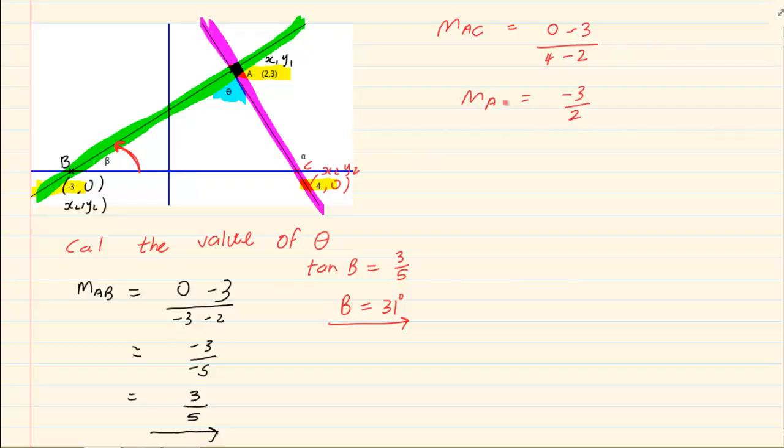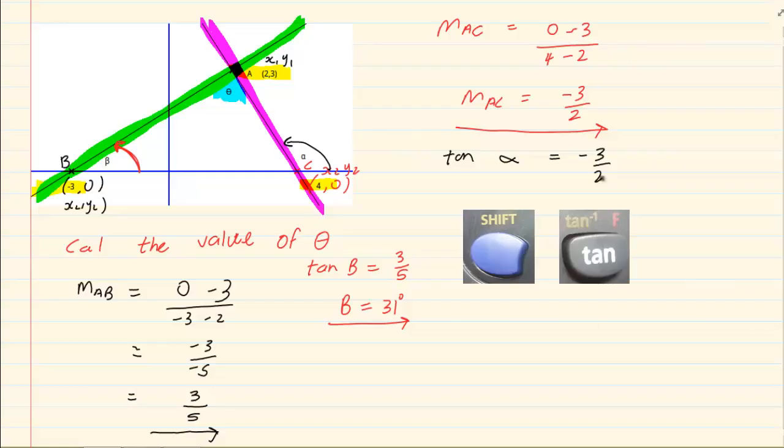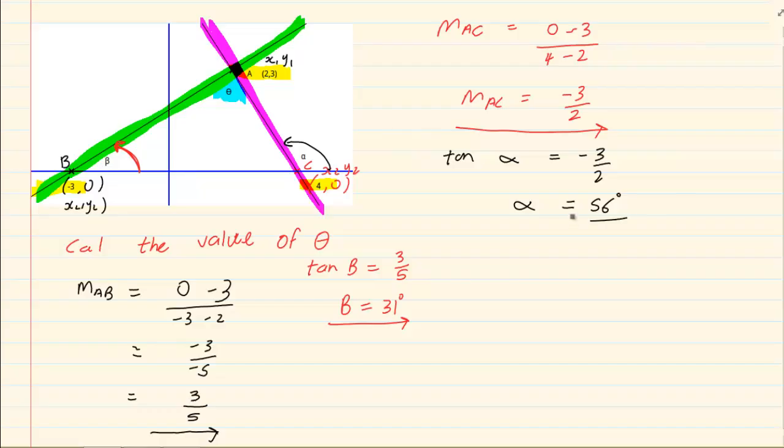So our m of AC is equal to minus 3 over 2. If we're looking for the inclination if we start from the right hand side and we move towards the left it is our alpha. So we have tan of alpha is equal to minus 3 over 2. Press shift tan 3 over 2 which is equal to minus 56 degrees. Let's round off to a whole number 56 degrees. But since it is a negative I know it's in the second quadrant so I'm going to say 180 minus 56 degrees which is equal to 124 degrees.